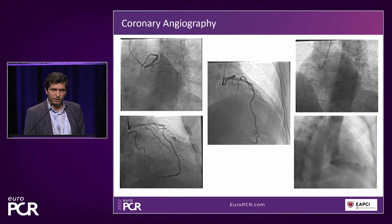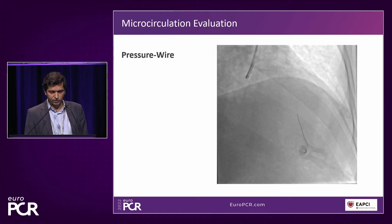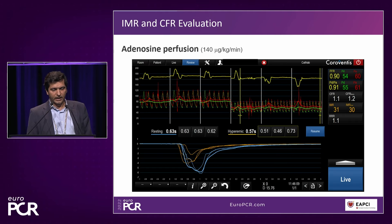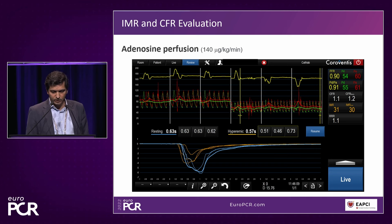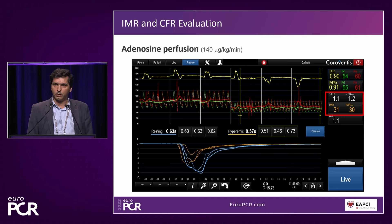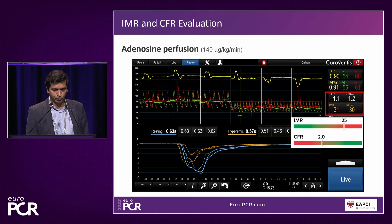Having a patient with chest pain suggesting angina and a positive ischemia test, we decided to evaluate the microvascular circulation. A pressure wire was advanced, and we measured IMR and CFR. You can see the thermodilution curves at rest in blue and after hyperemia with adenosine in orange. The results were CFR of 1.1 and IMR of 31. The threshold for IMR above 25 is considered high, and CFR is normal above 2. This patient clearly had a low CFR and high IMR.